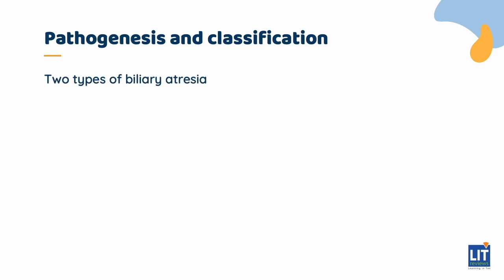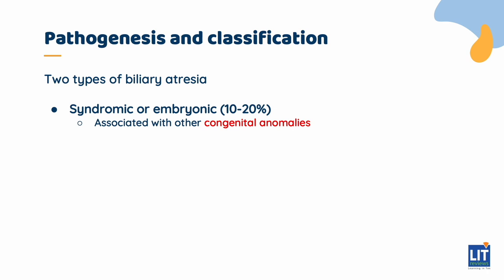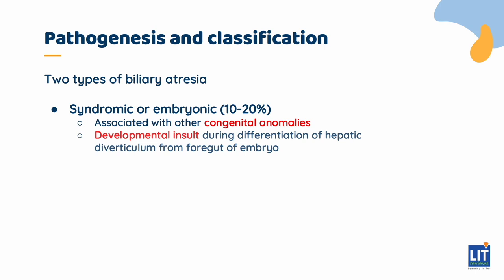Two types of biliary atresia have been described. The first is syndromic or embryonic, which represents 10 to 20% of cases. This type is associated with other congenital anomalies and is thought to be due to a developmental insult during differentiation of the hepatic diverticulum from the foregut of the embryo.